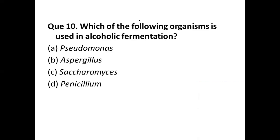Question number ten: which of the following organisms is used in alcoholic fermentation? Options are: (a) Pseudomonas, (b) Aspergillus, (c) Saccharomyces, (d) Penicillium. The correct answer is option (c) Saccharomyces. Saccharomyces is preferred for alcohol fermentation due to its fermentation performance, flavor and aroma compound production. Saccharomyces is also used for the production of recombinant interferons.